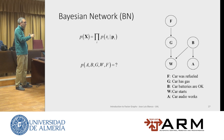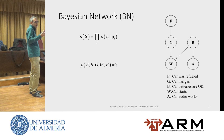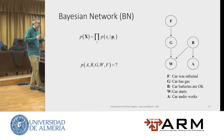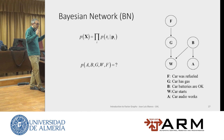Let's do an exercise. This is a simple toy model of a car for reasoning about why a car starts or doesn't start. F means the car was filled with fuel. G means the car has gas. B means the batteries are okay and charged. W means the car starts. A means the audio works. These are discrete variables that may be true or false, each assigned a probability.